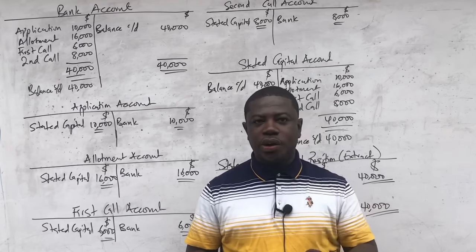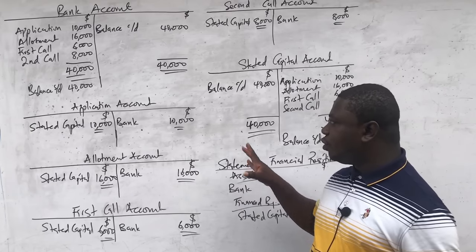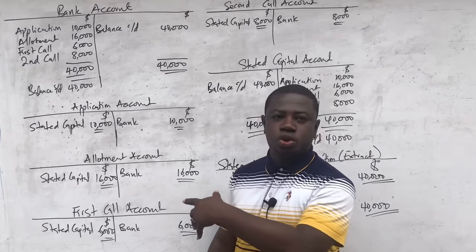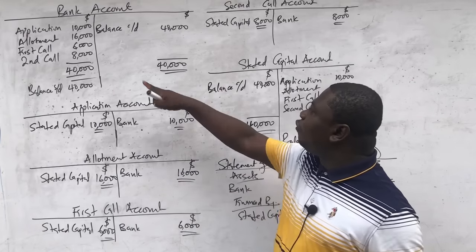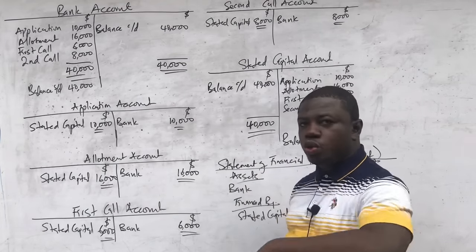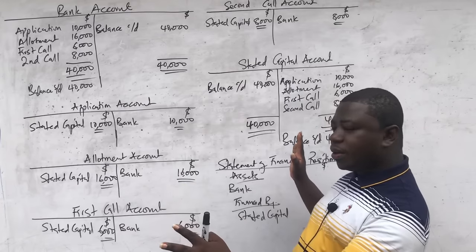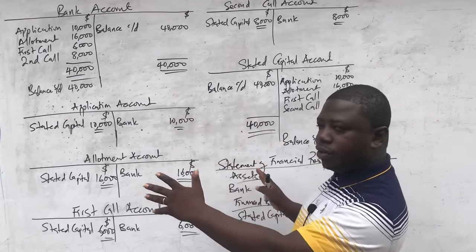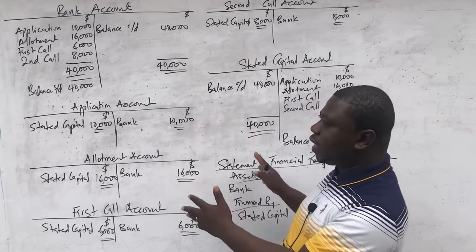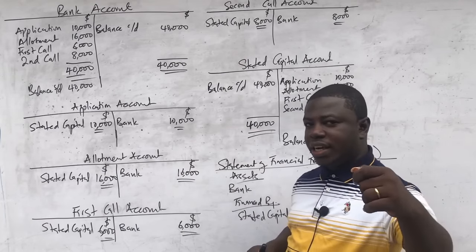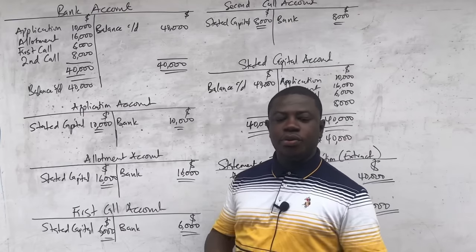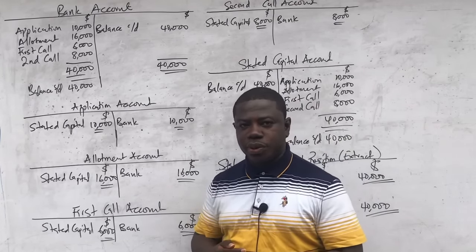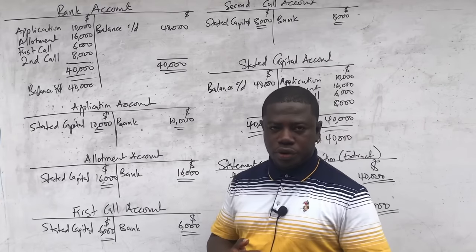I am going to show you how to record the journal entries using the same question, assuming the question also required journal entries. For every double entry we have done, we will record a journal entry. The account that received the debit entry will be written first, just as we did for correction of errors.